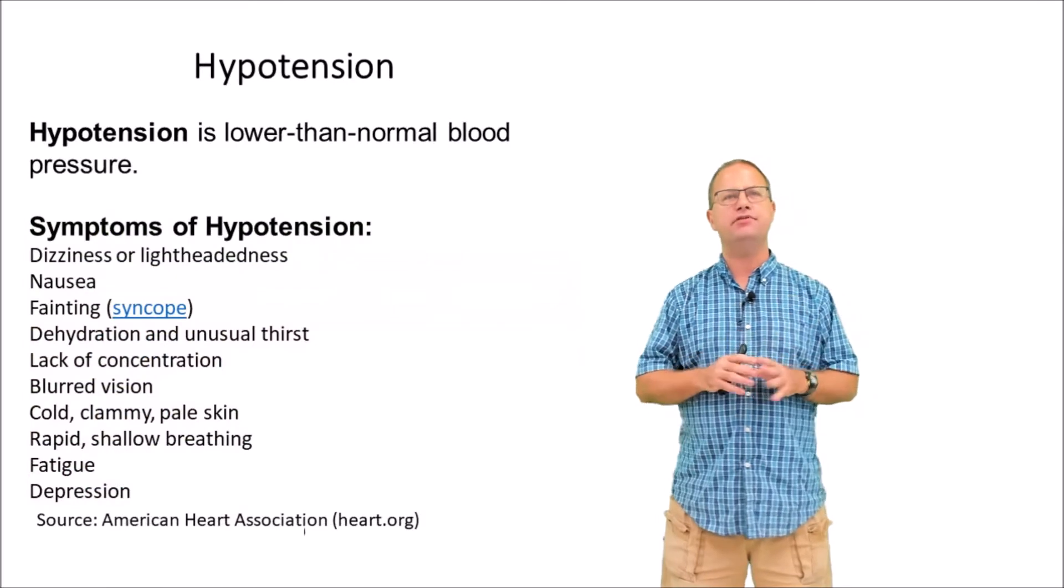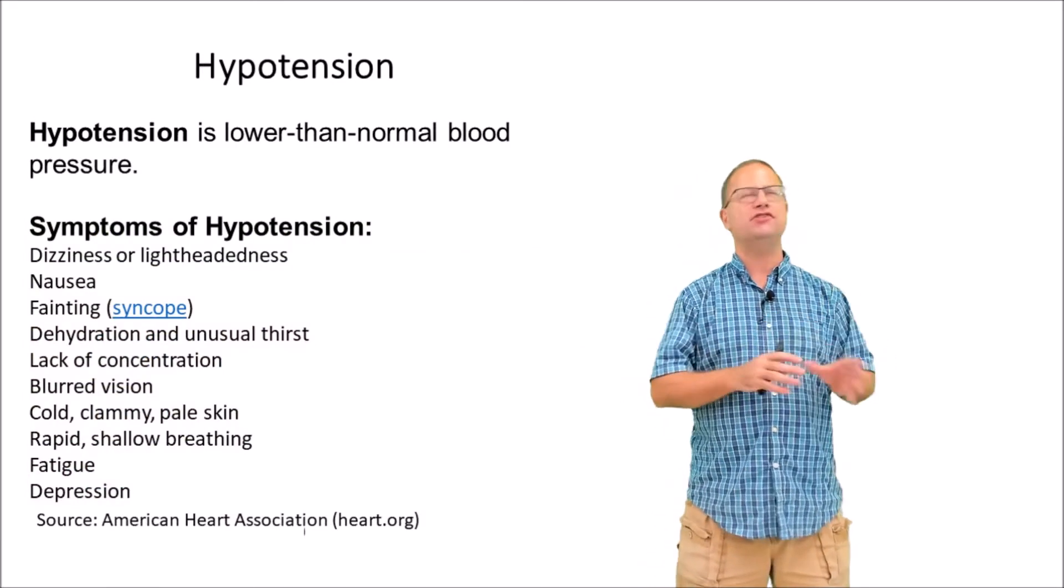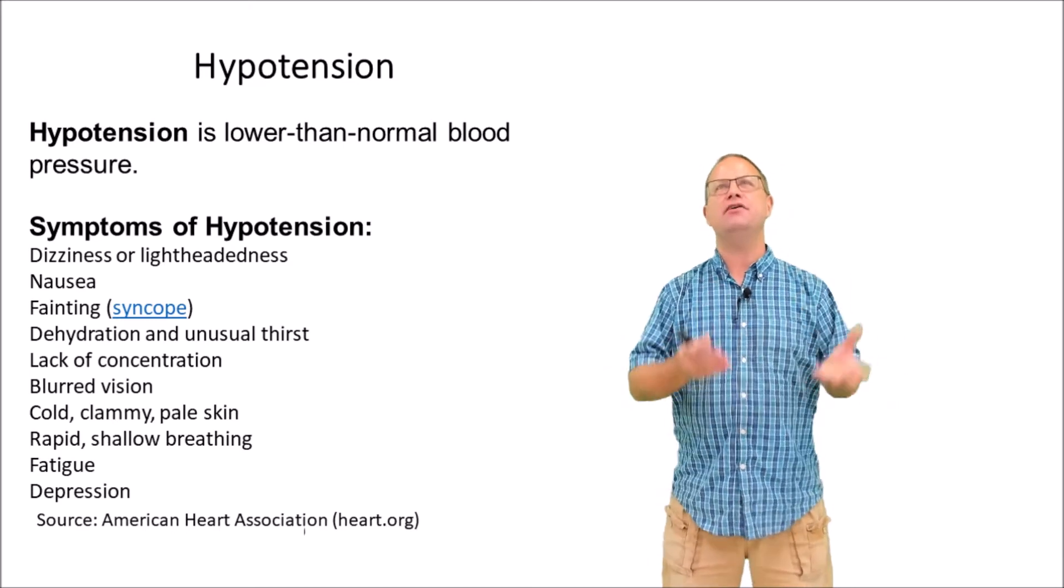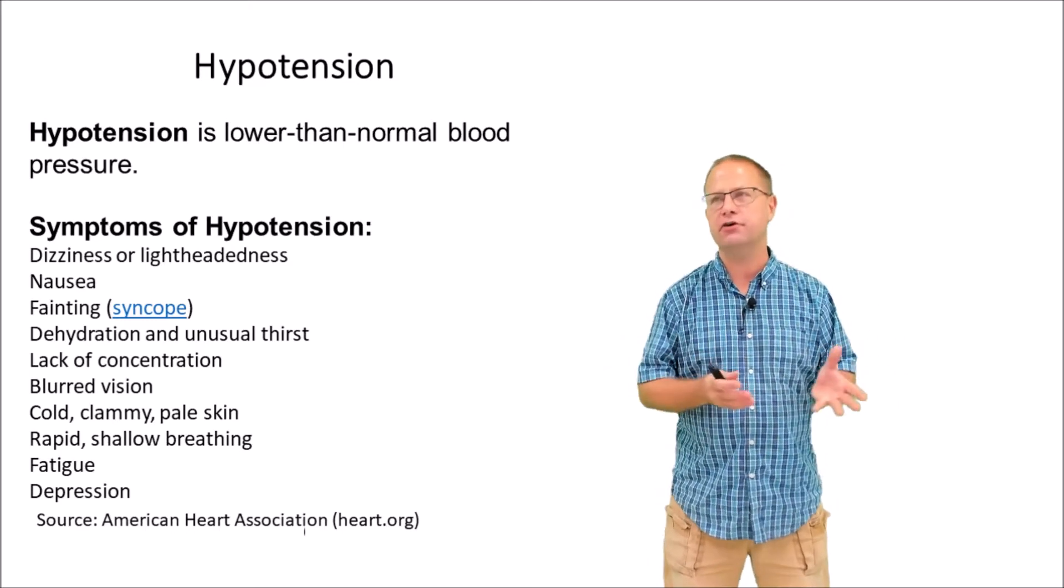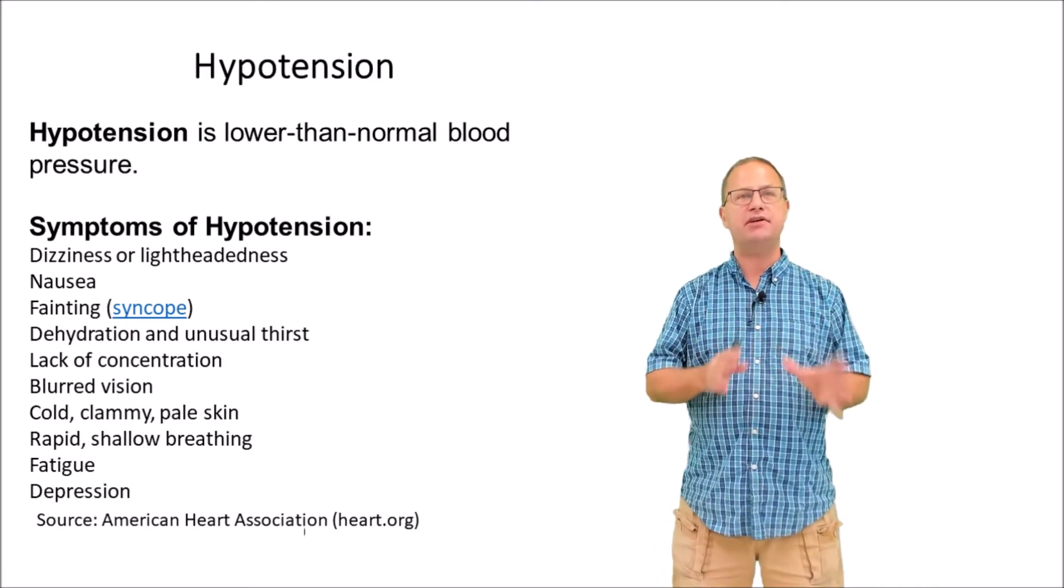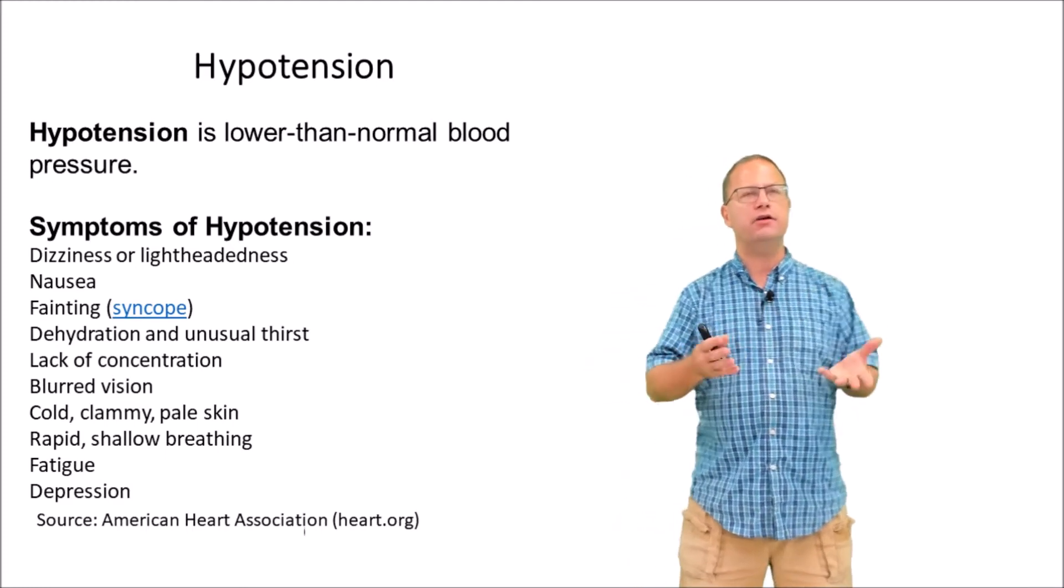On the other hand, hypotension is a lower than normal blood pressure. The American Heart Association doesn't have any one blood pressure that they consider hypotensive, but I can tell you if you have a mean arterial pressure that's lower than 70 or so, that's going to indicate hypotension that needs to be addressed.